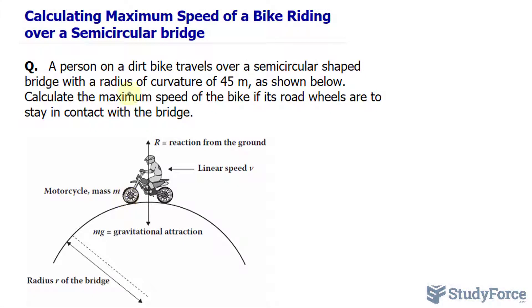Calculate the maximum speed of the bike if its road wheels are to stay in contact with the bridge. Now, the reason why that last part is important is because if this biker would speed up too much, then they would lift off from the surface of this bridge. We'll discuss that further in a moment.